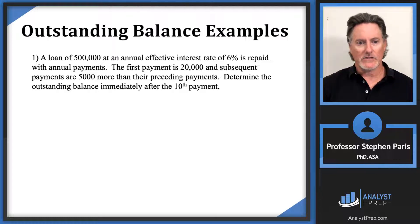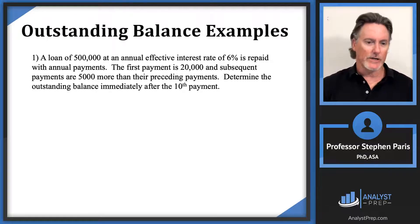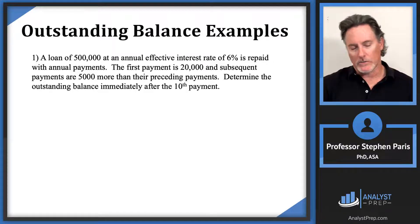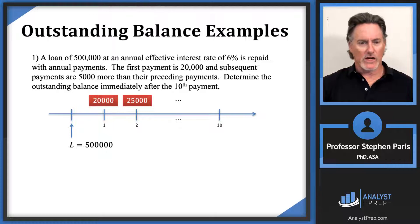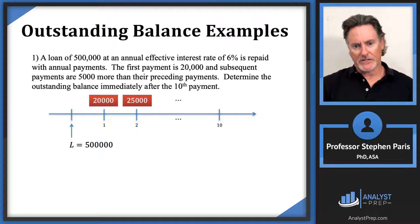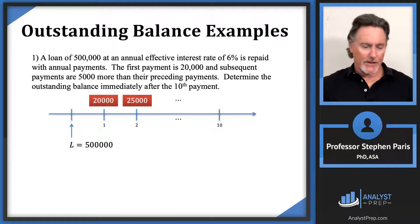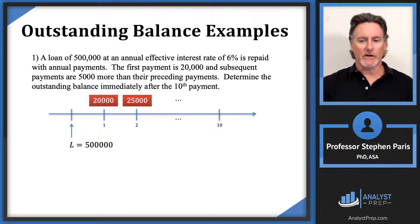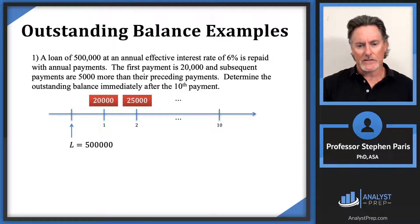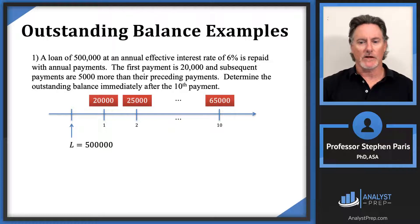We need to determine the outstanding balance immediately after the tenth payment. I'll draw a timeline. The first payment is $20,000, the next at time 2 is $25,000. Following that pattern, the payment at time 10 would be $65,000, and what we want is the balance just after that payment at time 10.